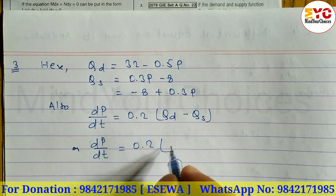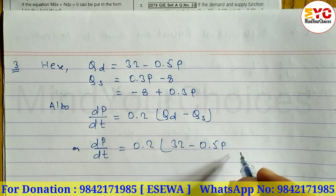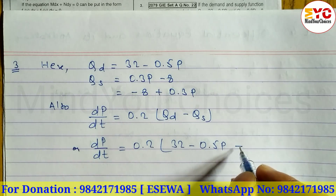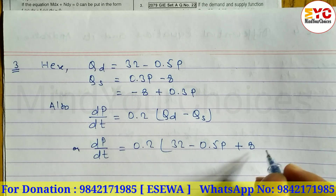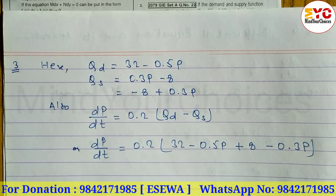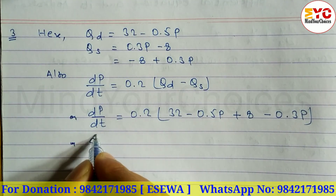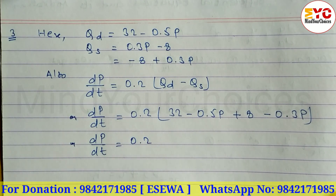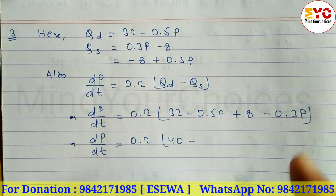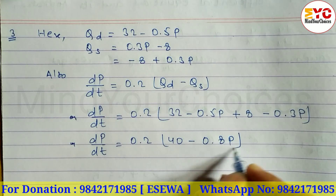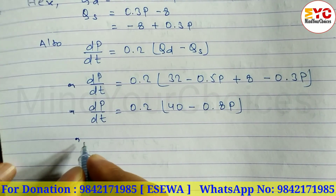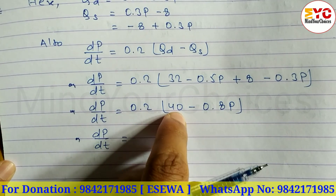Substituting the values of qd and qs: dp/dt = 0.2[(32 − 0.5p) − (−8 + 0.3p)]. Inside the bracket, −8 becomes +8. Adding 32 + 8 gives 40, and combining the p terms: −0.5p − 0.3p = −0.8p. So dp/dt = 0.2(40 − 0.8p).